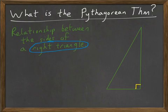That is, the triangle has to have a right angle. The right triangle has three sides. The long one, across from the right angle, is called the hypotenuse.